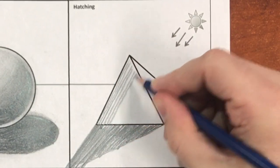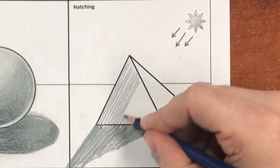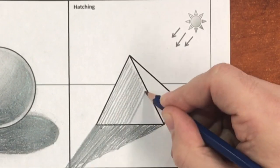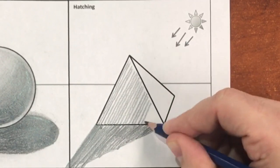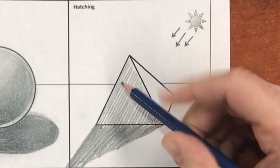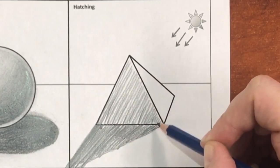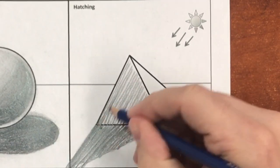Again start with the darkest region first, typically the cast shadow and the core shadow. And remember to control the lightness and darkness by placing your lines closer together in order to create dark tones and spacing them out further in order to create lighter tones.